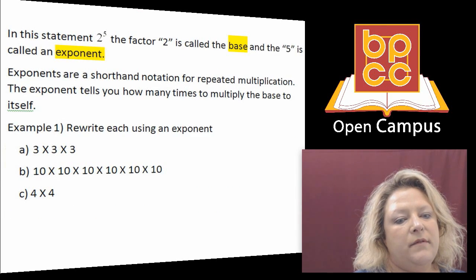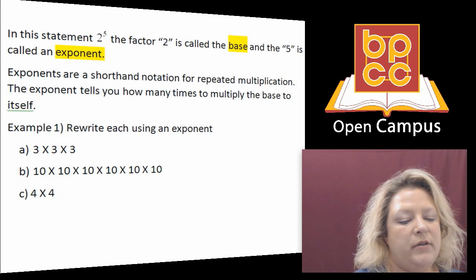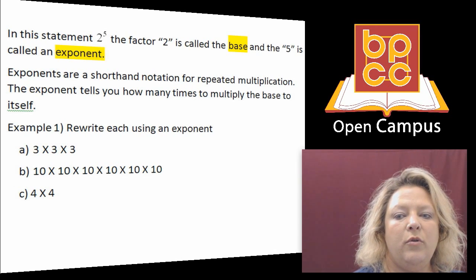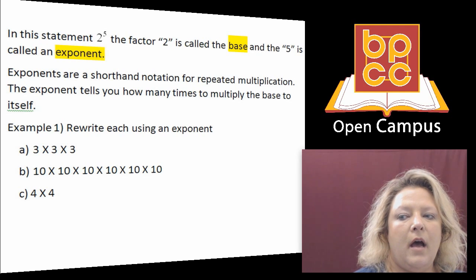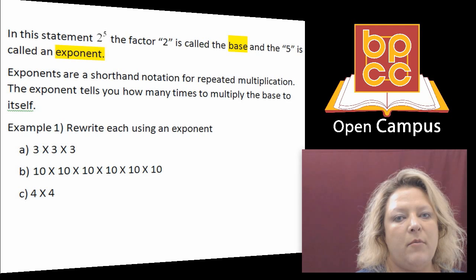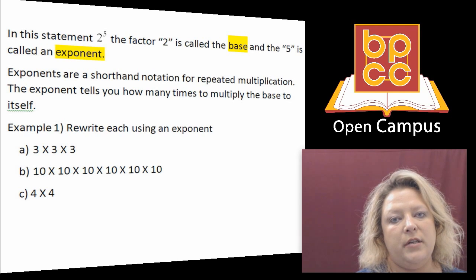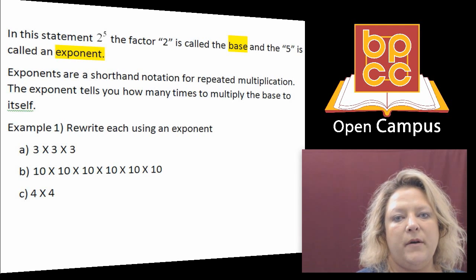When you have these, there are two vocabulary words that you need to know. The two is called the base, and the five is called the exponent. The base is the big number, which tells us that's the number I'm going to use for my multiplication. And the five is the exponent, which tells me how many times I am going to multiply that number by itself.